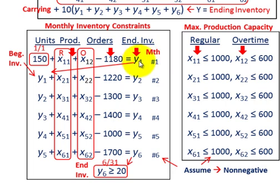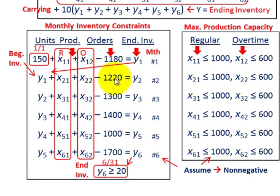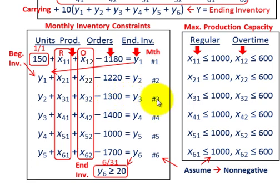For the next month, ending inventory y1 becomes the beginning inventory in month two. So it would be y1 plus regular production x2,1 plus overtime x2,2, using the same scheme as in our objective function. We subtract the orders for the month — 1,220 — and that equals y2. Then y2 becomes the beginning inventory in month three: y2 plus x31 plus x32 minus orders of 1,300 equals y3.